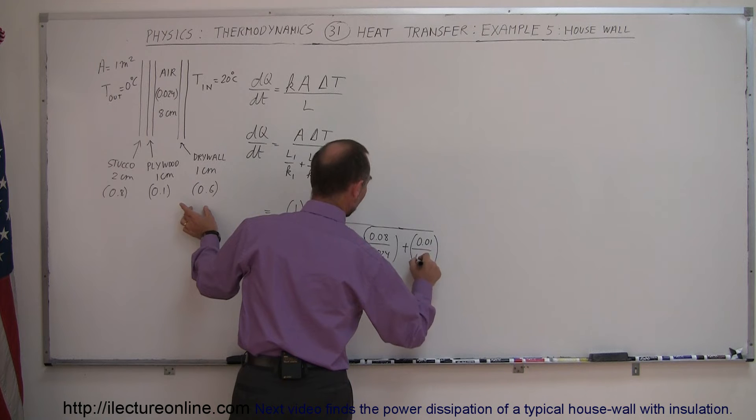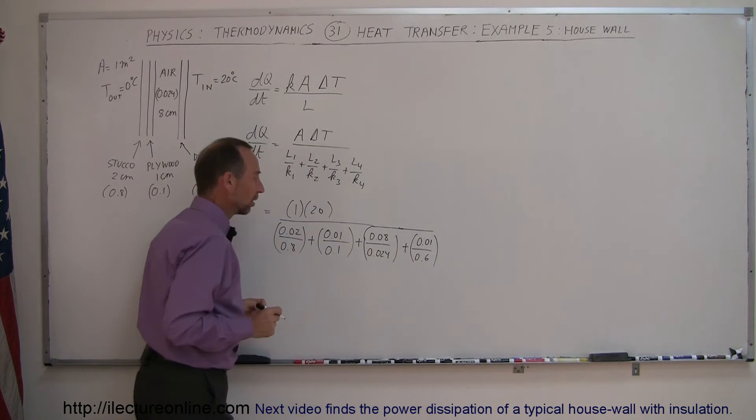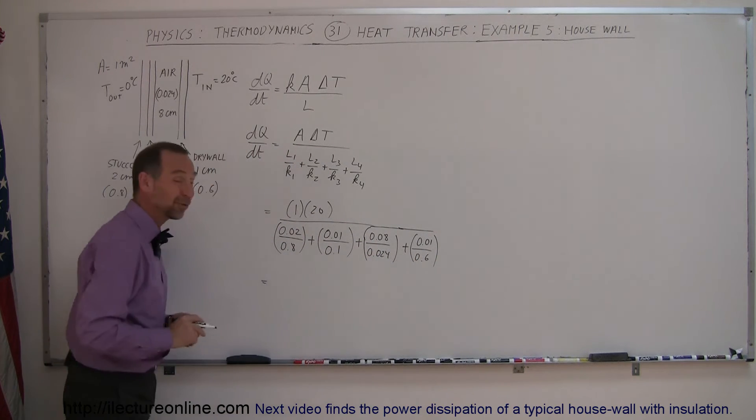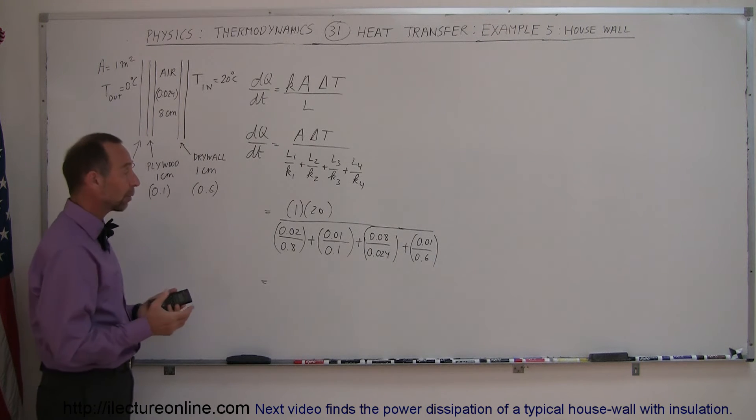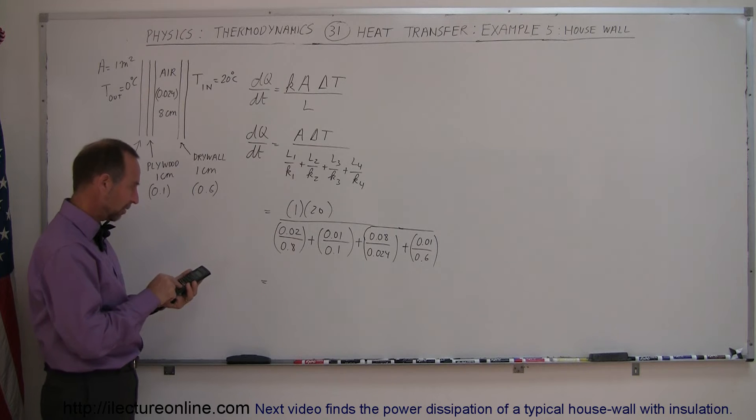And that would be a 0.6 conductivity coefficient. So let's find out how much heat, and this of course will be in joules per second or watts that we lose through each square meter of surface. So we have 0.02 divided by 0.8 plus 0.01 divided by 0.1 plus 0.08 divided by 0.024 plus 0.01 divided by 0.6 equals.